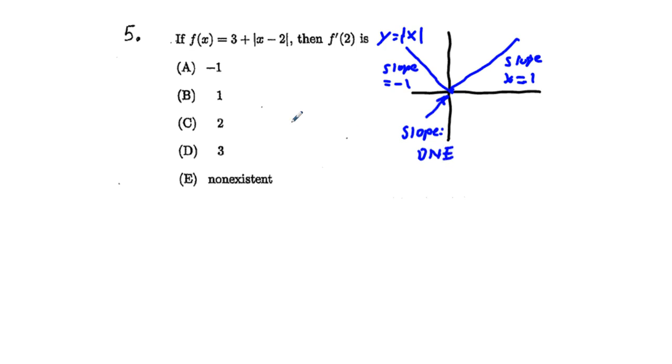Our answer is going to have to be either negative 1, 1, or does not exist, and so we can just cross out answers 2 and 3. Now, we can just translate this function. We have inside parentheses here X minus 2 shifts the function 2 units to the right. And then this 3 plus shifts the unit 3 units up.